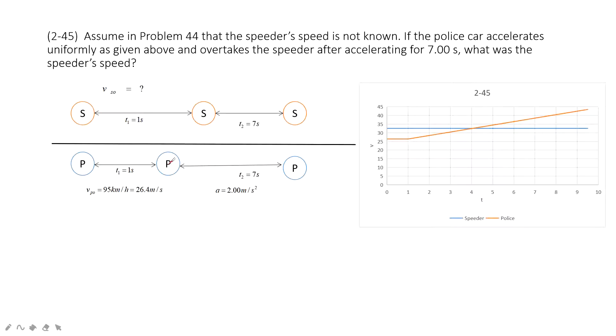Then, the police just accelerates with the acceleration 2.0 m per second square. And 7 seconds later, they just reach the same displacement.